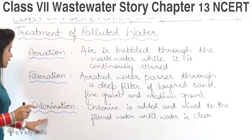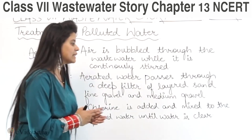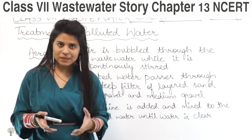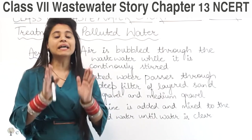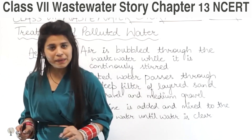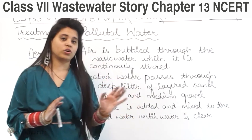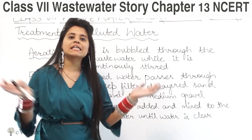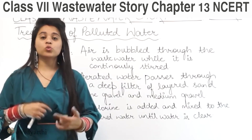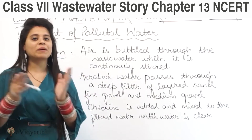The last step is chlorination. Chlorine is added and mixed into the filtered water until the water is clear. After the water is filtered, we add chlorine tablets, and the water will become clear. But again, this is basically just an experiment. For actual sewage or wastewater, you cannot treat it using this method alone — there are different machines and methods that we will discuss next.